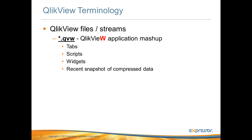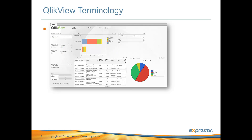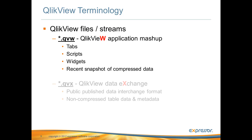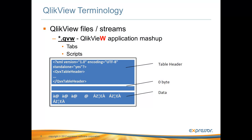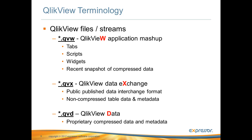Expressor can harvest metadata from the QVW file to create an Expressor ClickView schema. The next one is QVX. This is ClickView's open and publicly available data exchange format, which contains uncompressed data and metadata. This is what Expressor can currently read as a data source with its ClickView read operator, and writes as a target with the ClickView write operator. This file can also be used to harvest field metadata from. The last one is QVD. This is ClickView's proprietary compressed data stream or file. It, too, contains elements that describe data that can also be extracted to create ClickView schemas.